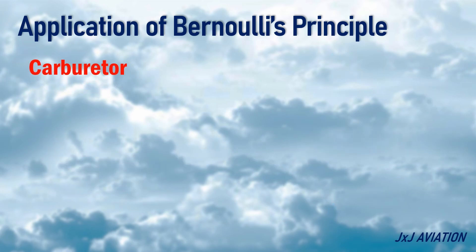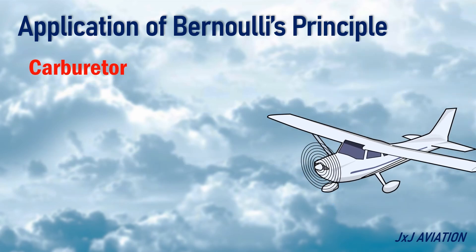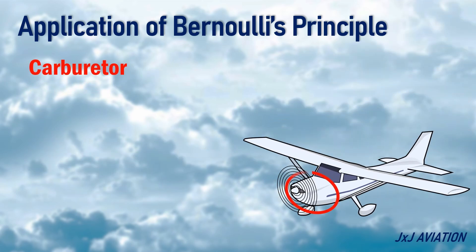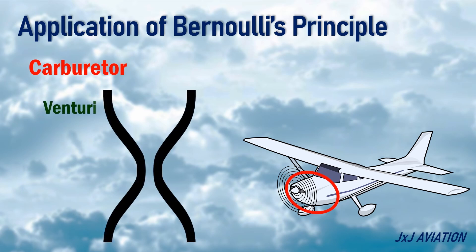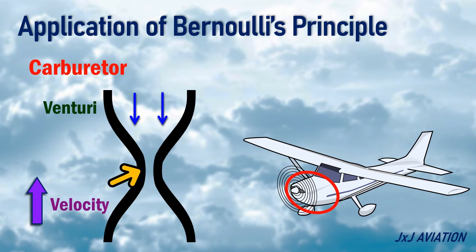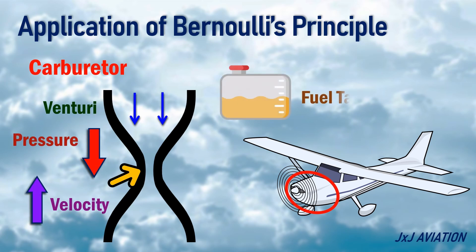Carburetor: on some piston engine aircraft, the carburetor is designed like a venturi tube. In this section, the air velocity increases and the pressure decreases. This decrease in pressure draws fuel from the fuel tanks to create a fuel-air mixture that is sent to the engine.